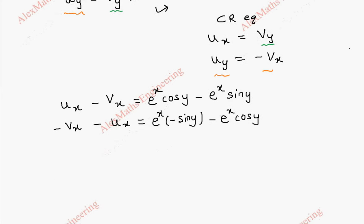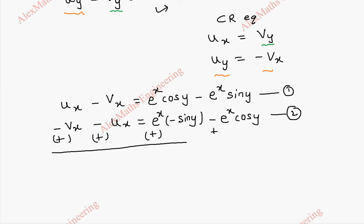Now we subtract the equations. We change the signs of all the second equation's terms — the minus becomes plus. So we can cancel plus vx and minus vx, and the two ux terms get added since both are positive. So 2·ux equals...